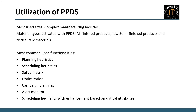Regarding current utilization of PPDS tools: PPDS finds application exclusively within manufacturing facilities, often bypassing distribution centers. However, not all manufacturing units adopt PPDS — it is primarily complex manufacturing facilities that implement it. PPDS predominantly serves finished products, although some clients extend its use to semi-finished products, and a select few implement it for critical raw materials. Commonly used functionalities include standard planning heuristics, standard scheduling heuristics, setup matrix optimization, campaign planning, alert monitor, and scheduling heuristics enhanced by critical attributes.